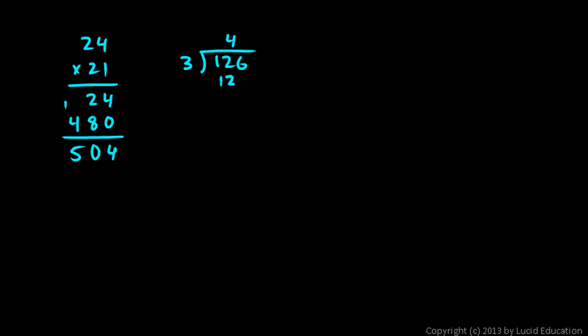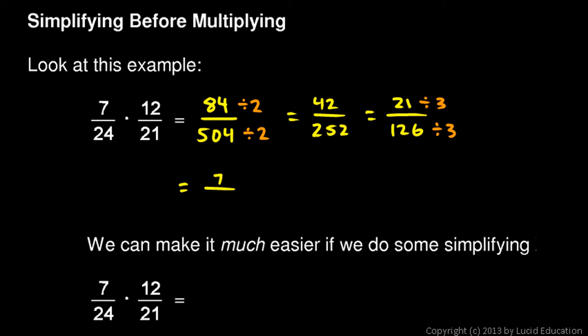126 divided by 3. So you've got a 12 here. 4 times 3 is 12. Bring the 6 down, 2. So 42. So 7 over 42. And 42 is divisible by 7. If I divide the top and the bottom by 7, I get 1 over 6.